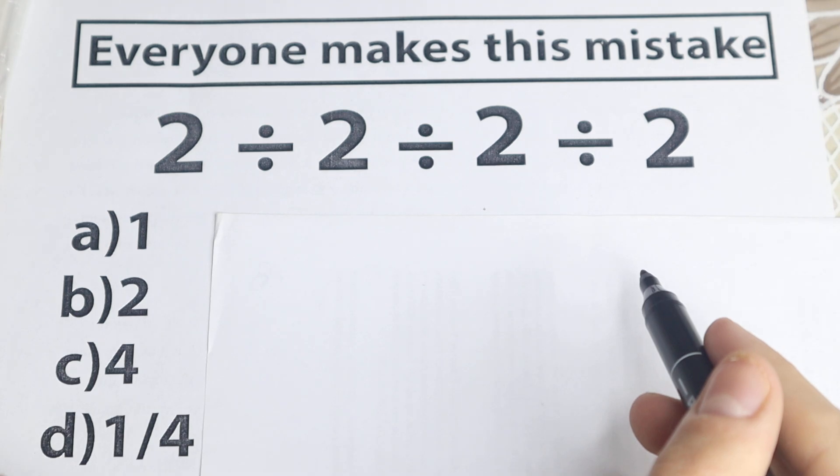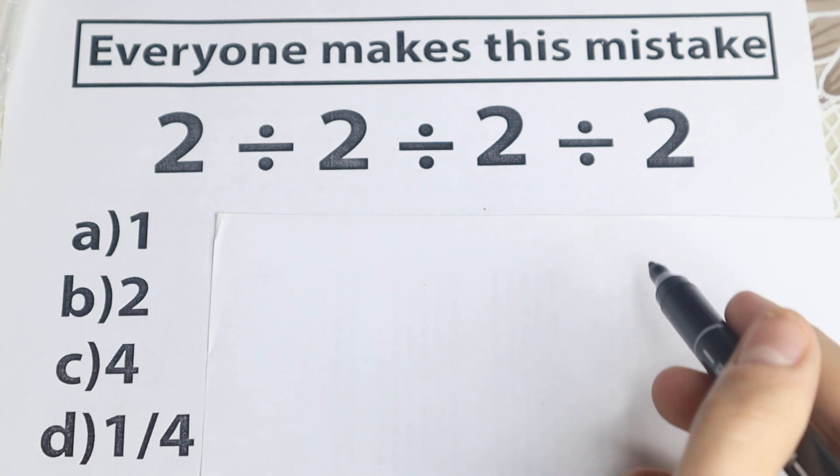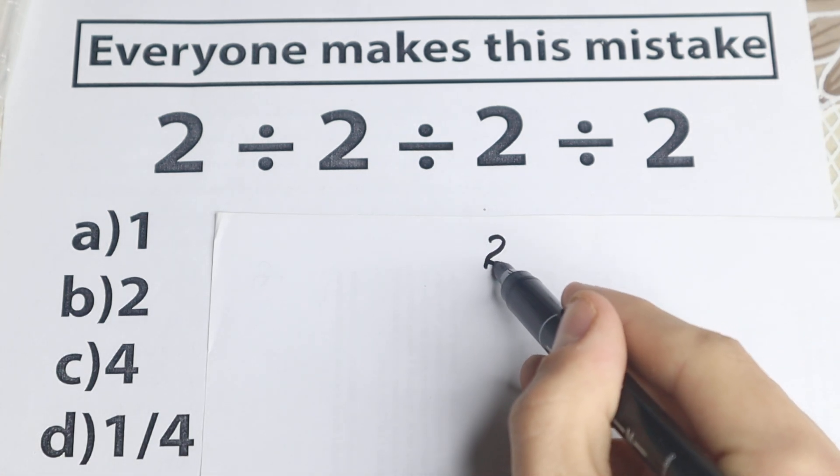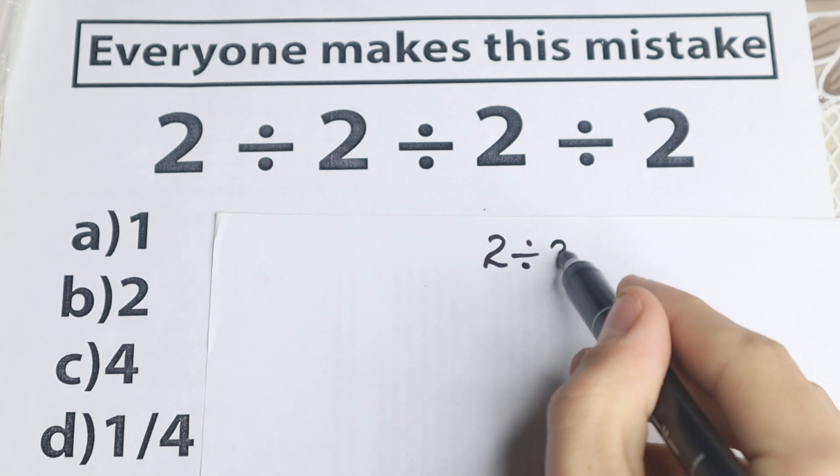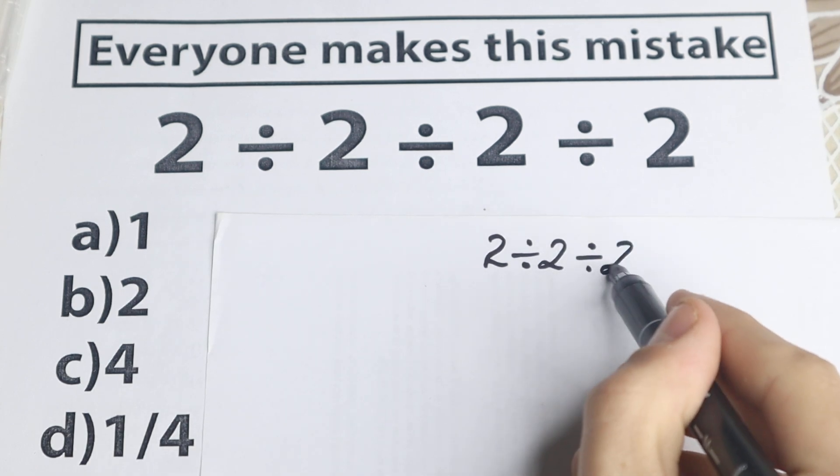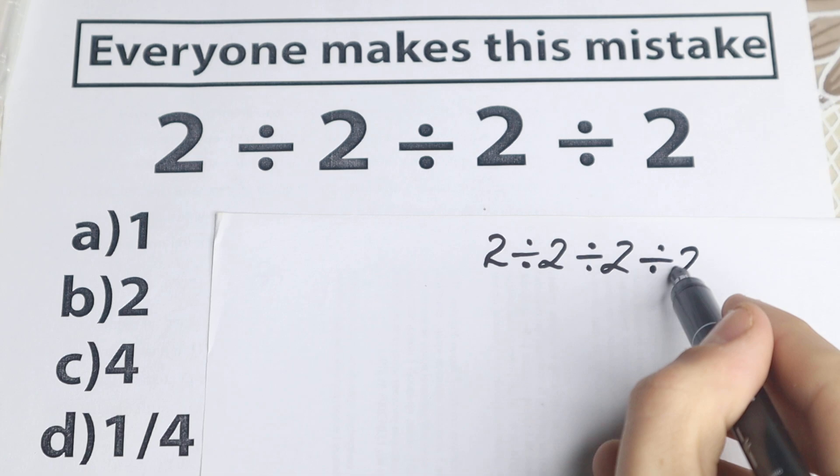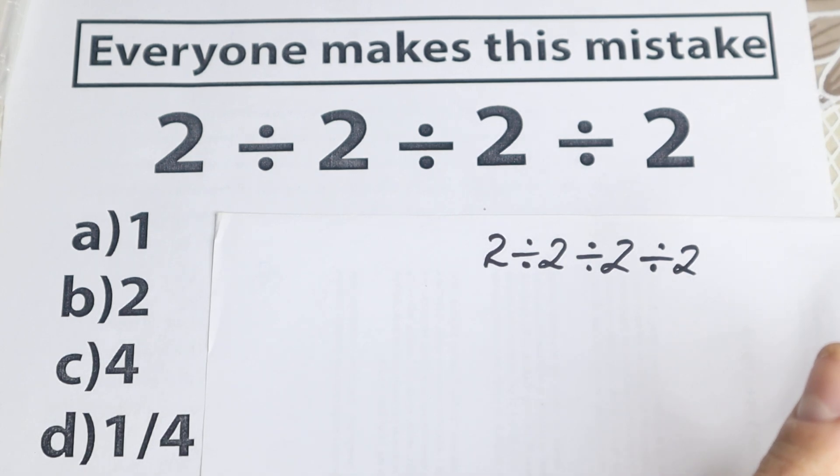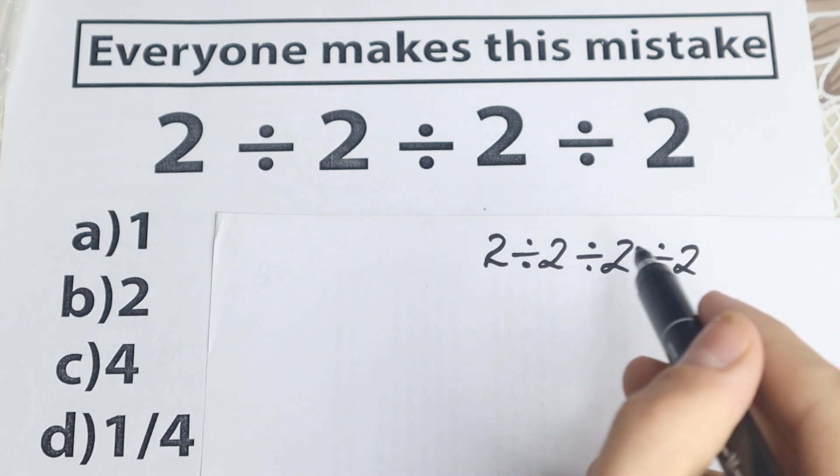So what is the main popular approach, how a lot of students solve this problem? So take a look, we have 2 divided by 2, divided by 2, and divided by 2. So a lot of students solve this problem like that. Right now I don't want to tell you that this is correct or incorrect, a lot of students solve it like that.